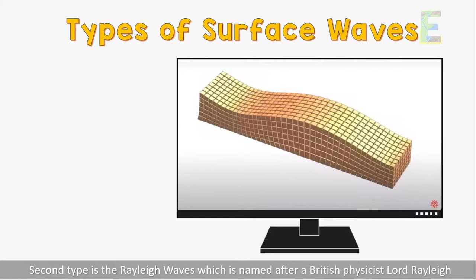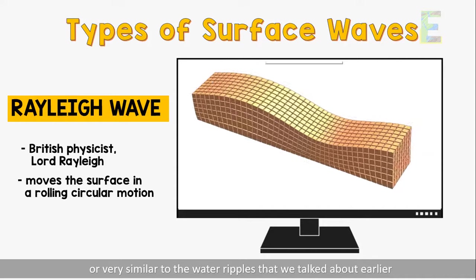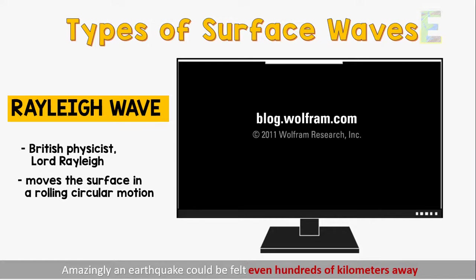The second type is the Rayleigh waves, named after British physicist Lord Rayleigh. These waves roll along the surface with an up-down and side-to-side motion, very similar to the water ripples we talked about earlier.